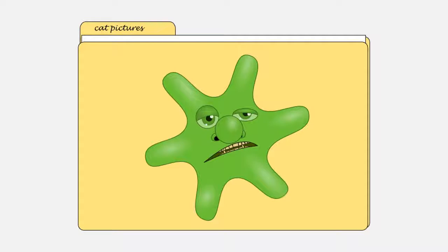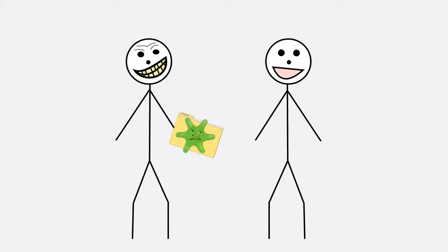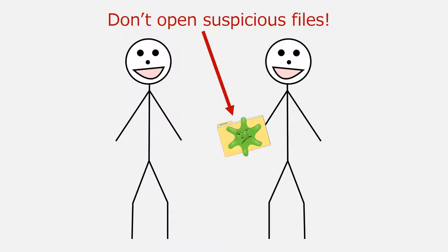What do we do if many of the file types that we use every day can potentially contain computer viruses? Obviously, we can't just refuse to open all files — if we did that, we couldn't really use our computers. What we can do is use discretion. Only share files and storage devices with people that you trust. Don't share files with people that you don't trust. And if somebody you trust shares a suspicious file with you, remember that you don't have to open it. You can delete the file or call the person to get more information about what they're sharing.